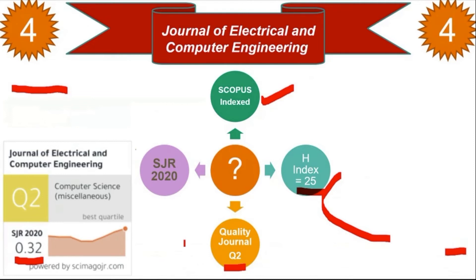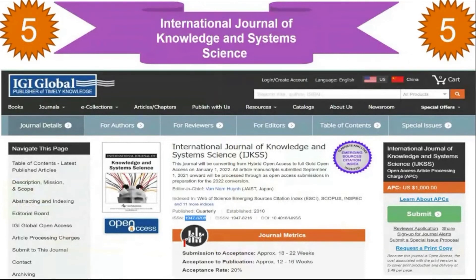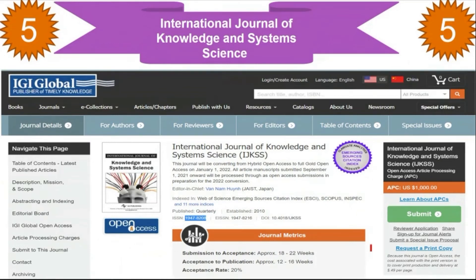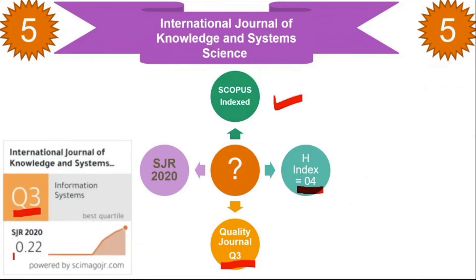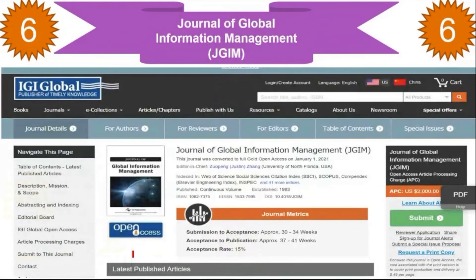The next journal is the International Journal of Knowledge and System Science. It is published by IGI Global and they mention all processing charges on the page. Checking our parameters: it is Scopus-indexed, the H-index of the journal is 4, it falls under Q3, and the SJR value is 0.22. If your research is related to information systems, you can go with this journal.